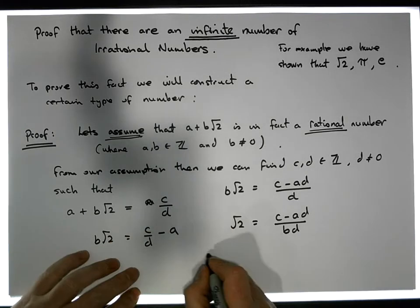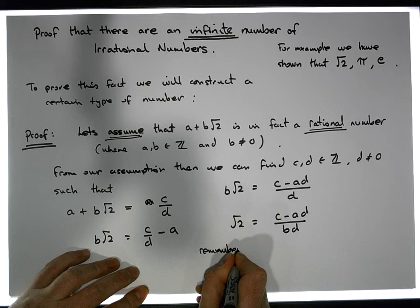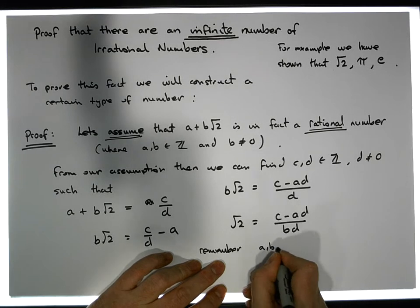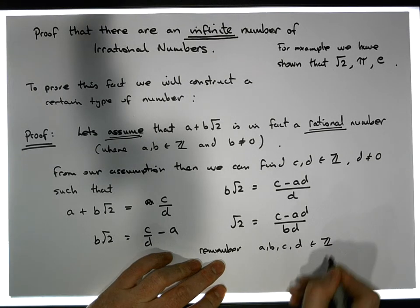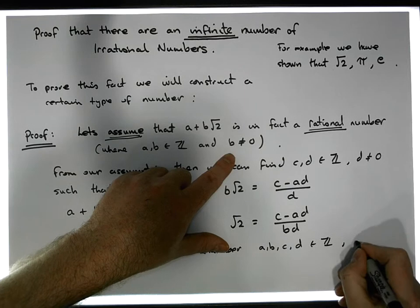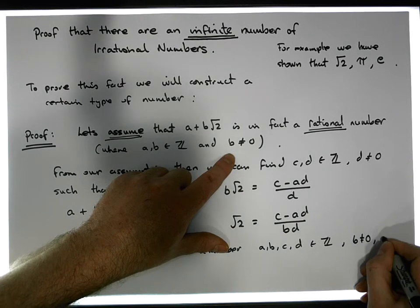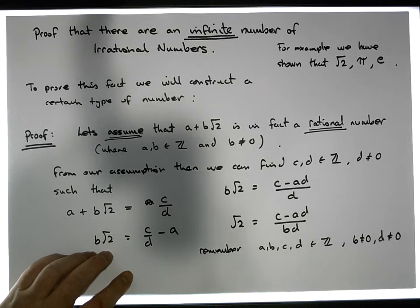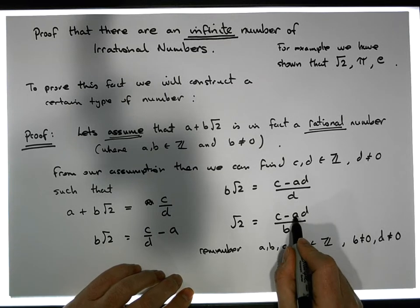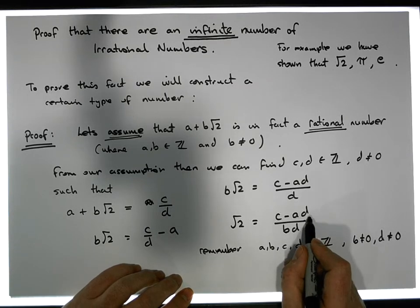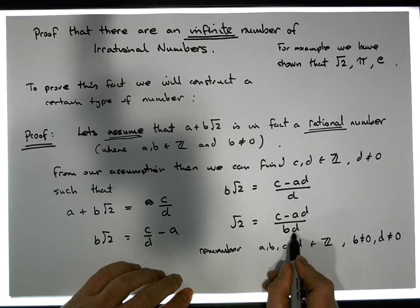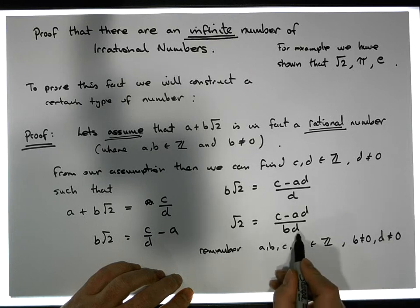But let's remember our choice of a and b, and our choice of c and d. Remember that a, b, c and d are elements of the integers, where b is not equal to 0 and d is not equal to 0. The product of 2 integers a times d must be an integer. c is an integer, so an integer minus an integer is an integer. And b times d, which is not equal to 0 because b isn't 0 and d isn't 0, is the product of 2 integers, so that gives us an integer.